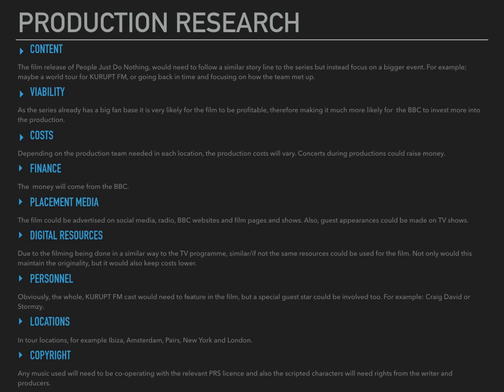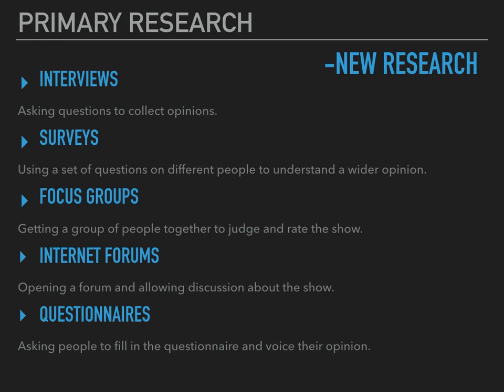Copyrights: obviously you're going to need to pay for copyright. If you're using other people's music in the film, you're going to need a licence for that. Also, if the script has been written by somebody else, you're going to need to pay them the copyrights to use that script. So you'll pay the writers and the producers.